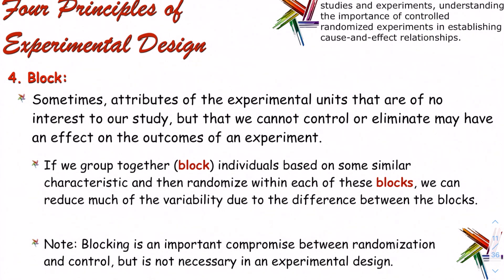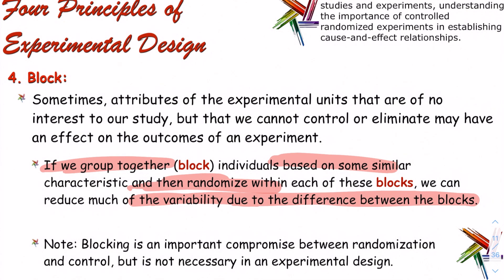The last principle is blocking. Sometimes attributes of the experimental units — like gender — that are of no interest to the study but cannot be controlled for may affect outcomes. By grouping together, or blocking, individuals based on similar characteristics and then randomizing within each block, we can reduce much of the variability due to differences between blocks. Note: blocking is an important compromise between randomization and control, but it is not always necessary in an experimental design.